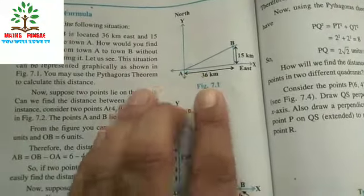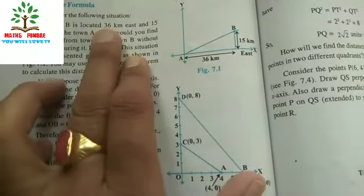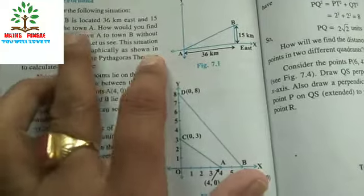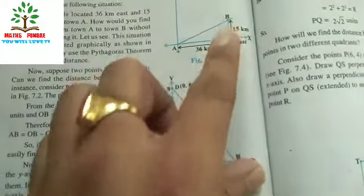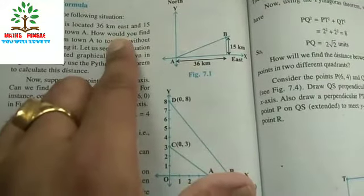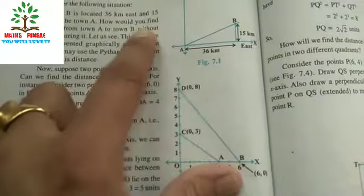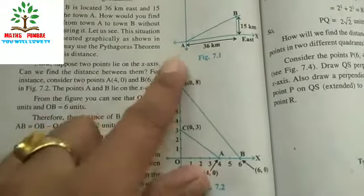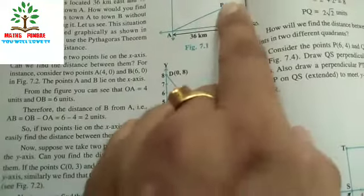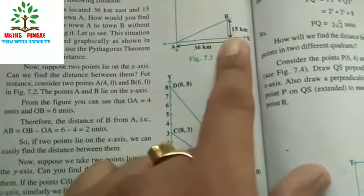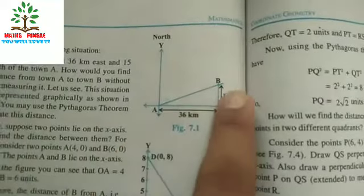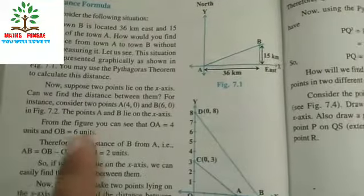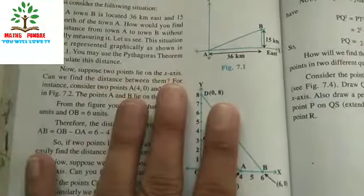Looking at Figure 7.1, Town B is located 36 km east and 15 km north of Town A. How do we find the distance from Town A to Town B? The situation can be represented graphically, and we can see a right-angle triangle is formed. By using the Pythagorean theorem — hypotenuse² = perpendicular² + base² — we can easily find the distance AB.